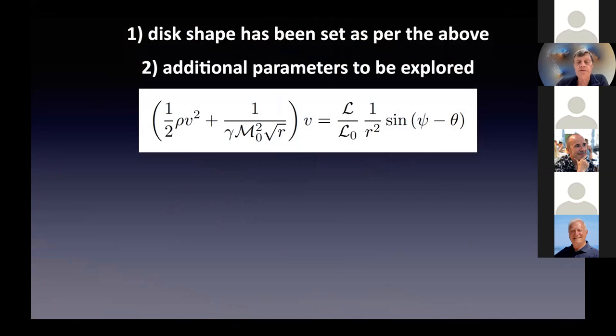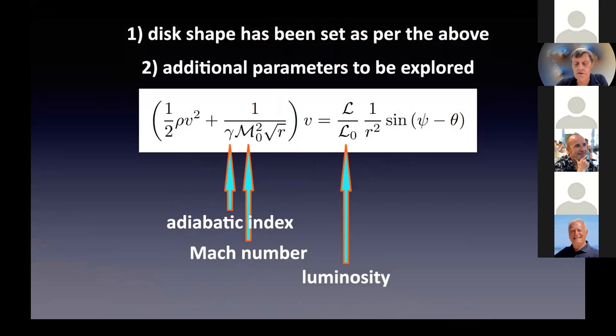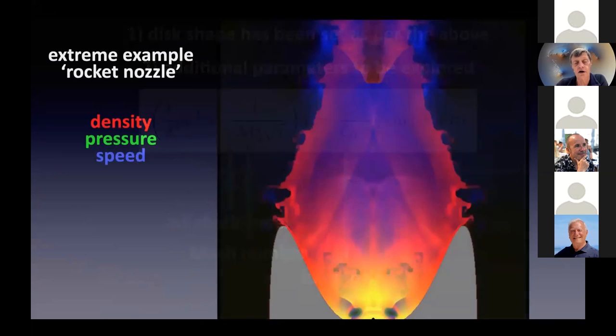When having set up this disk shape, we have a few additional parameters that we can explore in this particular simple setup. Of course, the adiabatic index of the flow, the Mach number of the initial flow, which is typically of order unity, so let's assume it is one for these simulations for the moment, and then of course the luminosity of the central object.